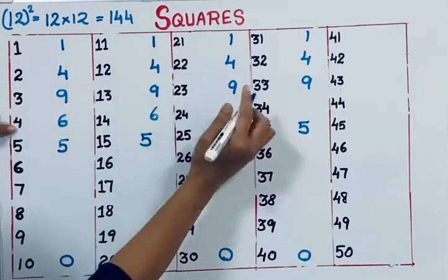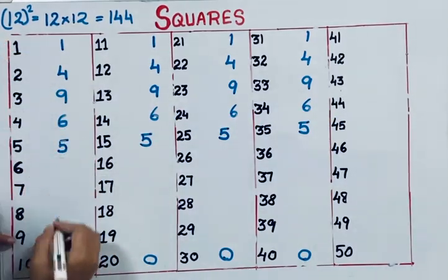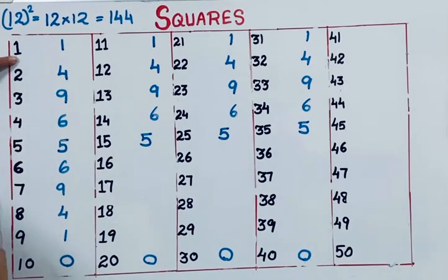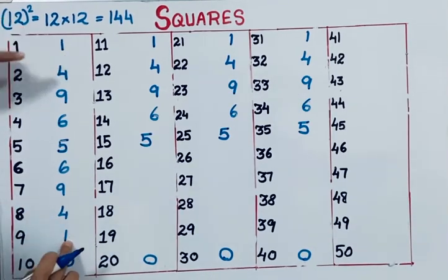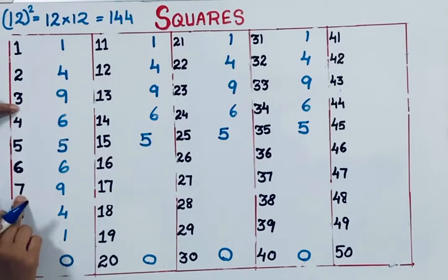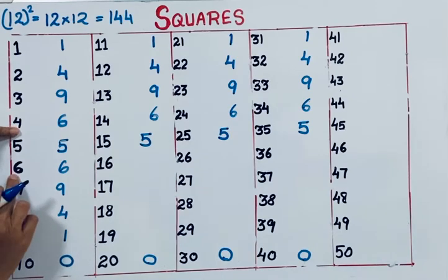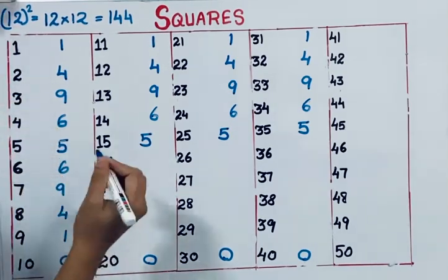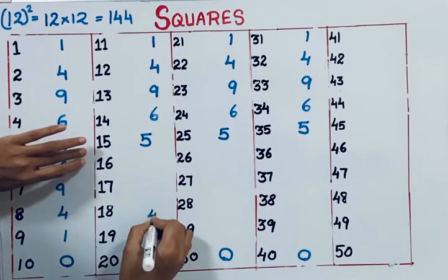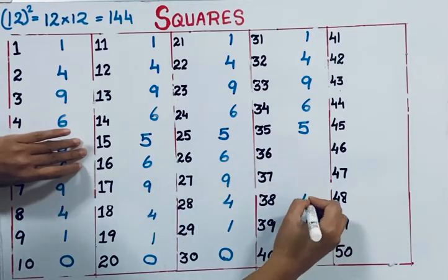If a number ends with 4, its square ends with 6. So the pattern 1, 4, 9, 6 repeats. Then from the bottom going upward it also repeats 1, 4, 9, 6 — because if a number ends with 1 or 9 its square ends with 1, ends with 2 or 8 its square ends with 4, ends with 3 or 7 its square ends with 9, and ends with 4 or 6 its square ends with 6.